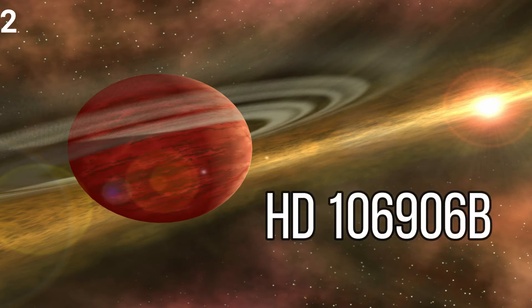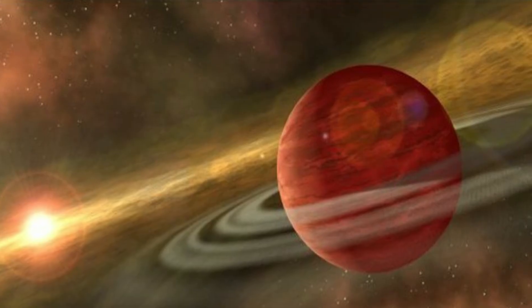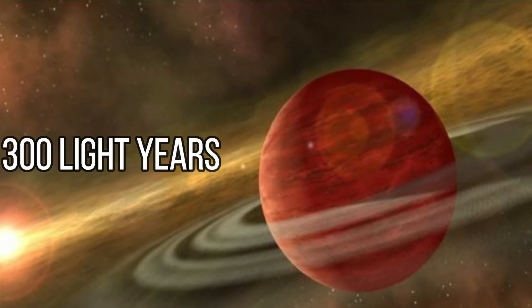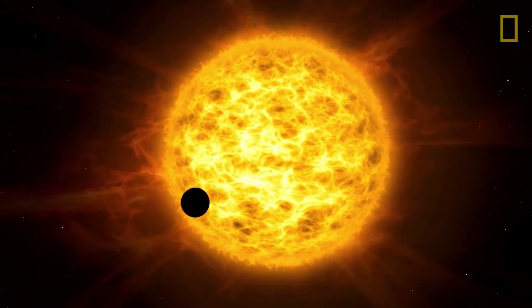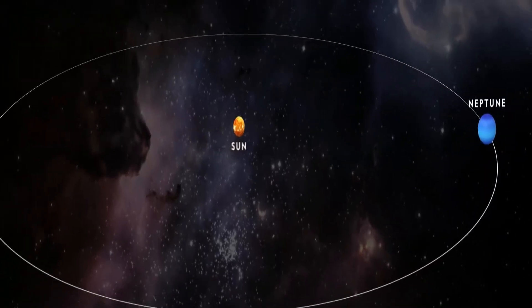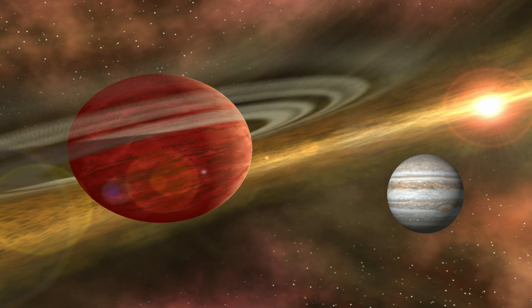Number 2: HD 106906b. This exoplanet is located 300 light years away from Earth. This planet orbits around its star at a distance of 60 billion miles, which is 20 times the distance between the Sun and Neptune. Its size is estimated to be about 11 times the mass of Jupiter.